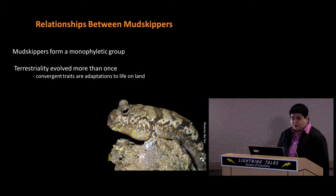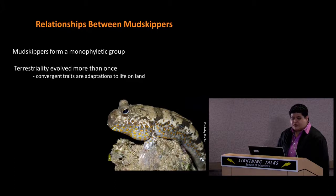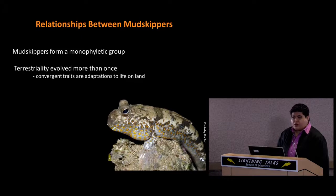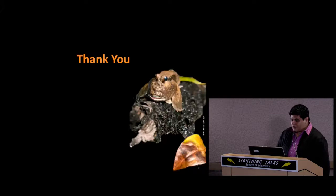In summary, we have found that mudskippers form a monophyletic group, demonstrated by several characters found only in mudskippers and absent in all other gobies. We have also shown that terrestriality evolved in two distinct clades within the mudskippers, and that all the characters previously used to unite the terrestrial mudskippers are really convergent traits — adaptations to life on land. Thank you very much.